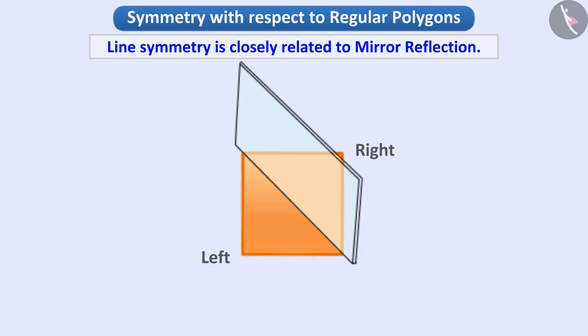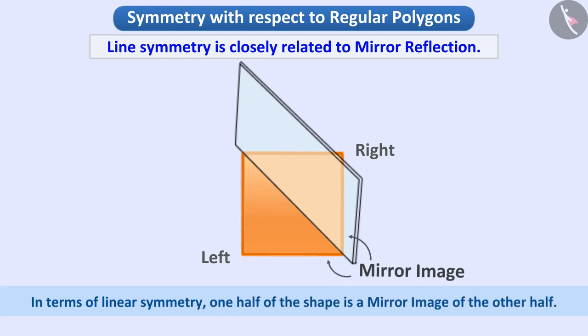Absolutely right. From this, we can understand that in terms of linear symmetry, one half of the shape is a mirror image of the other half.